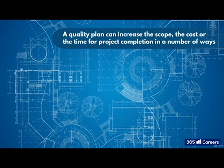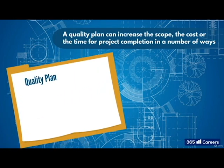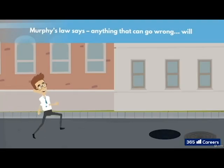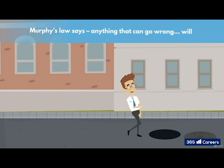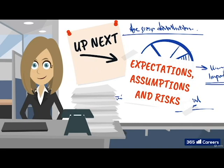A quality plan can increase the scope, the cost, or the time for the project completion in any number of ways, so a review of this is essential. We want all aspects of the project to be of the highest quality they can be, and the quality plan is here to ensure that this is exactly what we achieve. Now that we've tackled quality, resources, timing, and scope, as Murphy's Law says, anything that can go wrong, will. So the next crucial thing to talk about is how a project manager identifies risks and plans for their prevention or resolution.